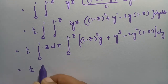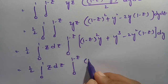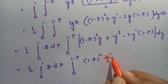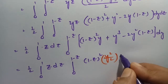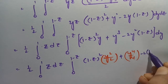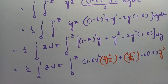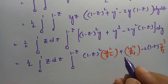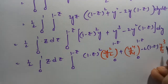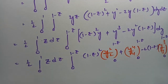Now I am going to integrate with respect to y. This will be one-half times integral 0 to 1 of z dz, and from 0 to 1 minus z: (1 minus z) squared, and for y the integration gives y squared by 2; for y cubed it gives y to the power 4 by 4; and minus 2(1 minus z) times y cubed by 3, between the limits y = 0 to y = 1 minus z.